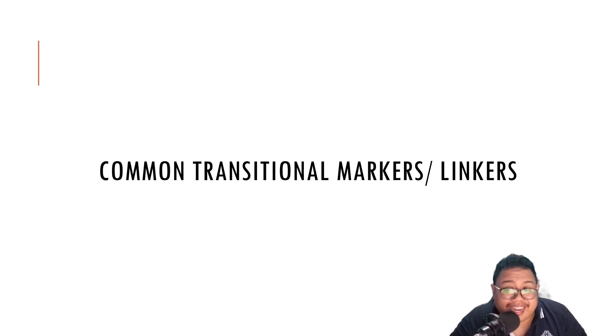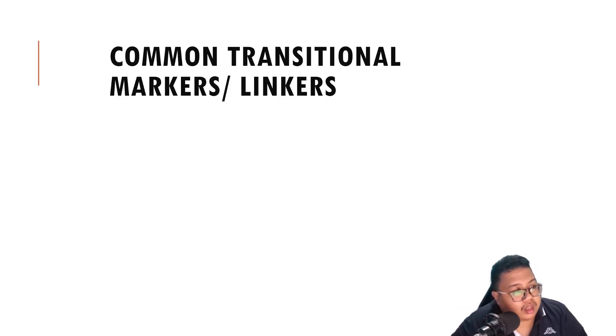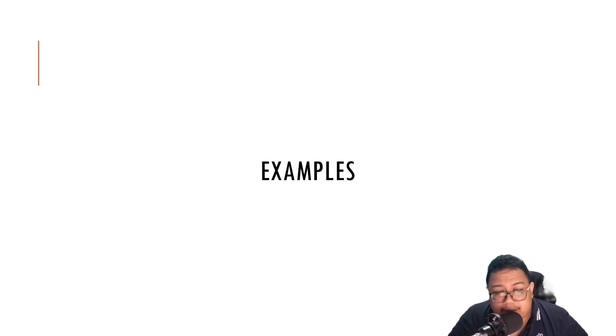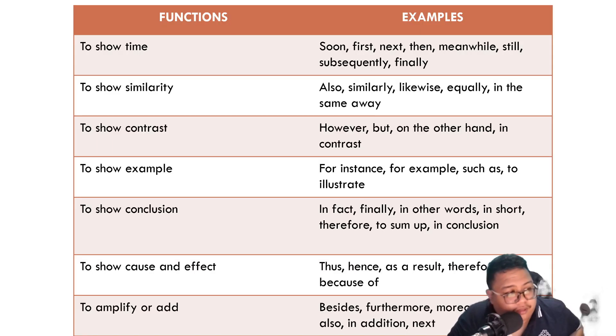Now, common transitional markers or linkers. What are those? These are words that are used in writing to show progression from one point to another. Because when you are writing, you want to show there is some sort of flow or organization in your essay. So you use transitional markers or linkers. They are also called as connectors. So there are some examples like this.